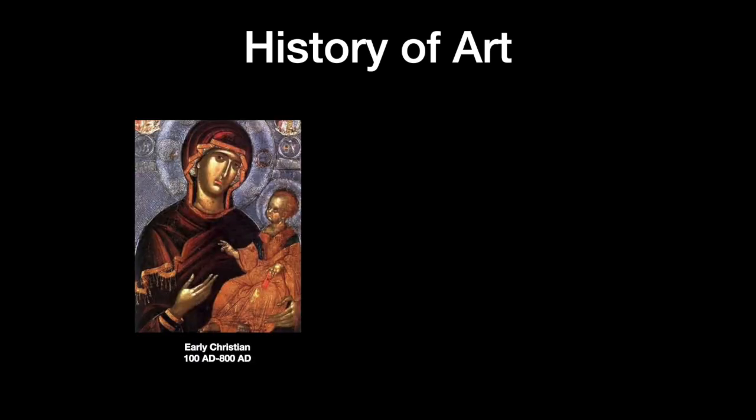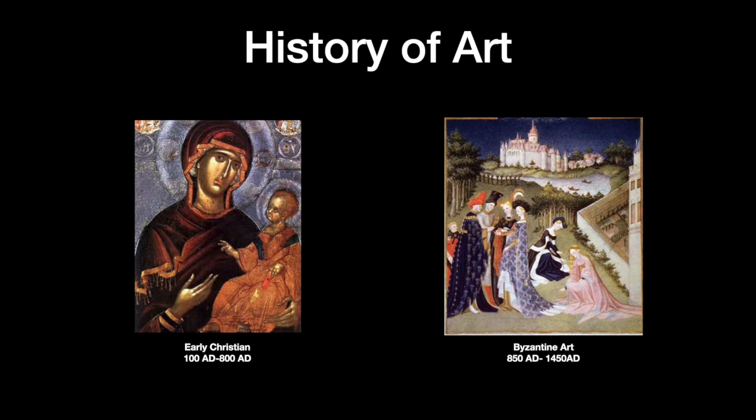We get into early Christian art — still very rudimentary, but now we're starting to get some shapes. We have some hands and fingers that we can start to make out, and we can start to sort of recognize people if we knew them. We keep going into Byzantine. We start to almost get a little three-dimensionality going there. This particular artist obviously didn't take any 2D or 3D drawing classes, but we do see some improvement — leaps and bounds.